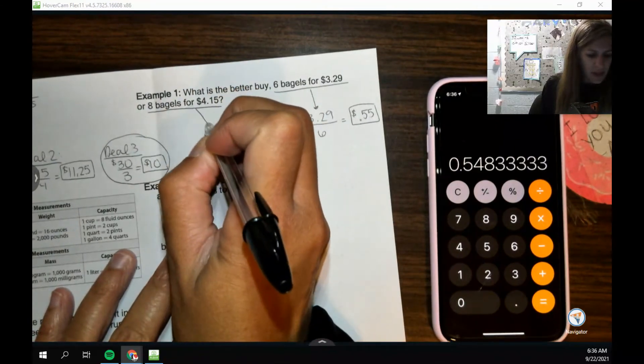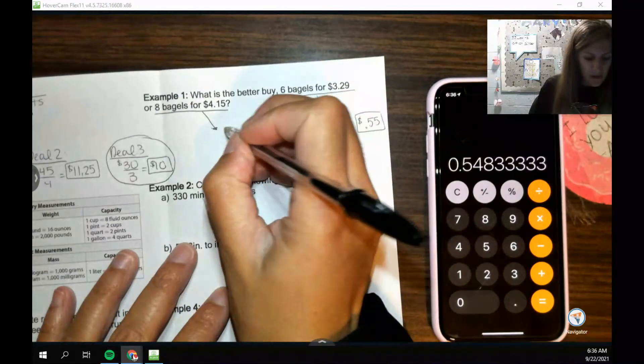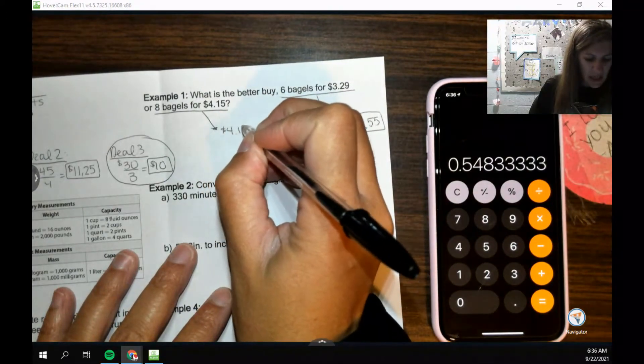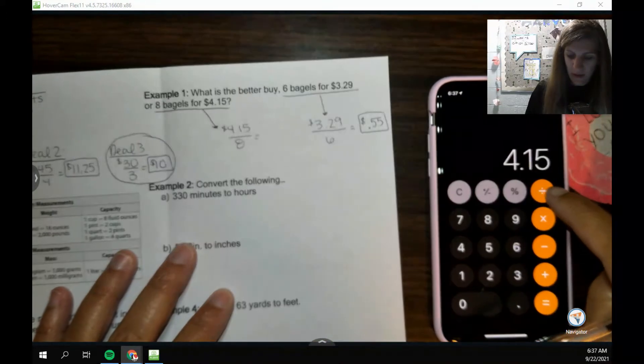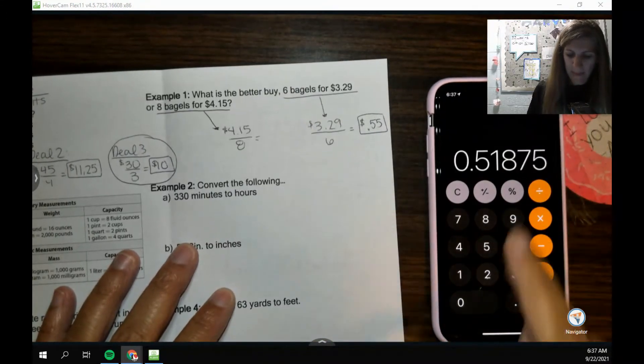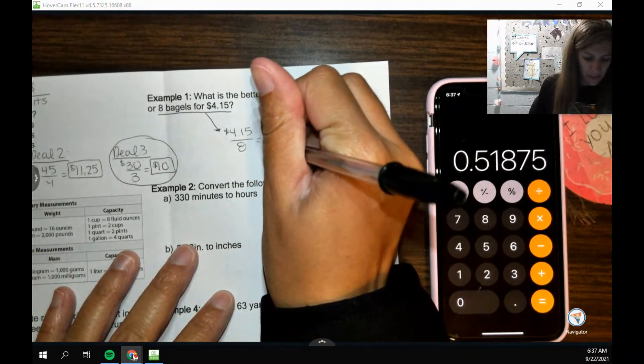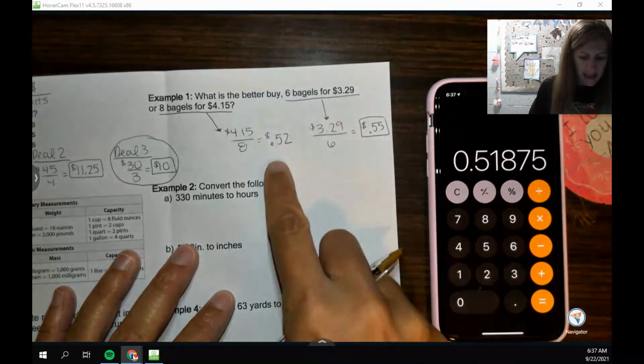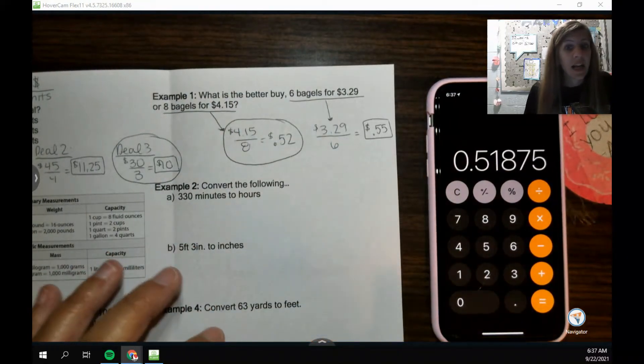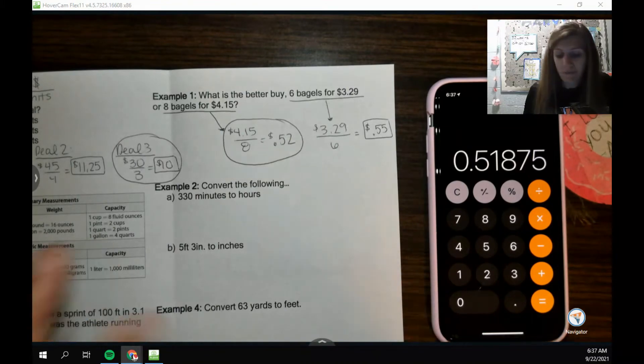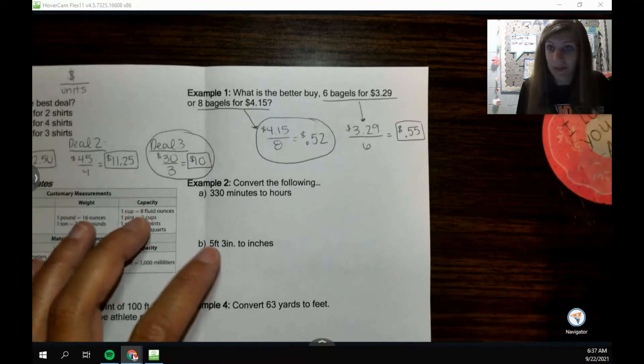Then I want to go over here and try this one out. If I do $4.15 divided by eight, that's $0.52. And that is the better deal. Getting eight bagels is the better deal because it is cheaper per bagel.